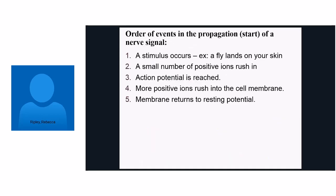Here is the order of events in the propagation — meaning the start of a nerve signal, covered on pages 577–578 of your textbook. Number one: a stimulus occurs, for example a fly lands on your skin. Number two: a small number of positive ions rush in through the cell membrane. Number three: if enough of that happens, action potential is reached. Number four: more positive ions rush into the cell membrane as action potential travels along the neuron. Number five: the membrane returns to resting potential.